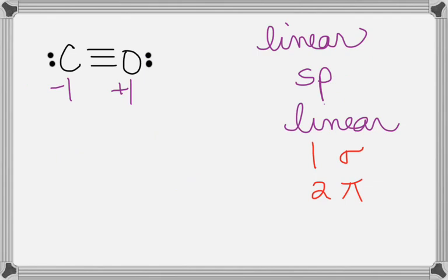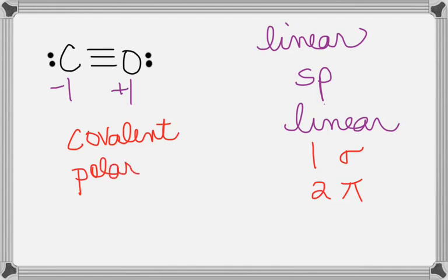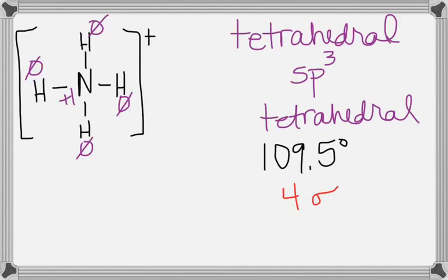Carbon monoxide: ion, ionic, or covalent? Covalent — and it's polar. NH4 plus: it's an ion, so we don't have to answer the polar/nonpolar question. But just for fun, if we pretend it was NH4 with a neutral charge, would it be polar or nonpolar? It'd be nonpolar — see how it's tetrahedral, perfectly symmetrical? It would be nonpolar. But we don't answer that on the actual ion.